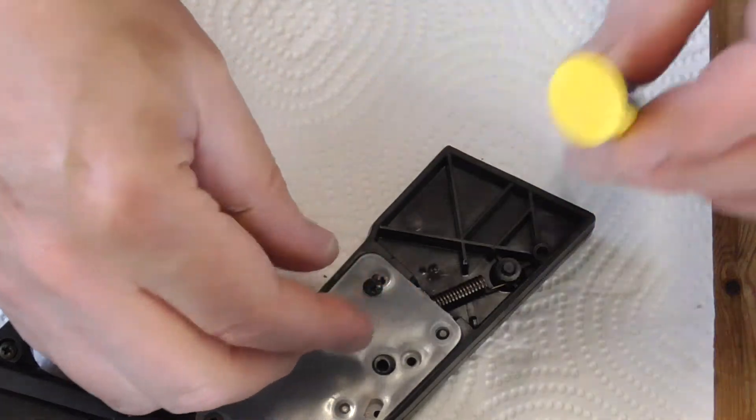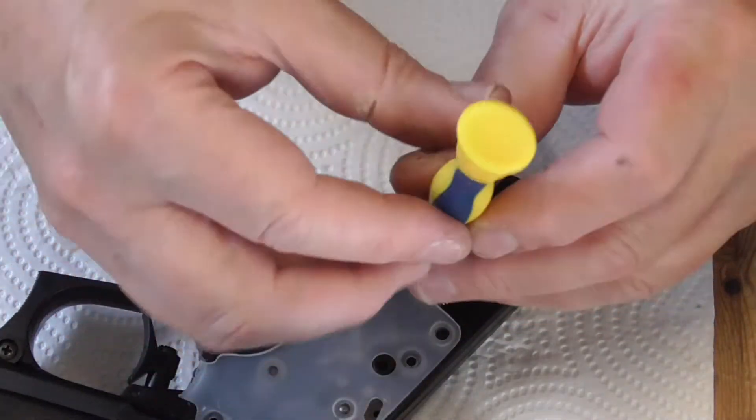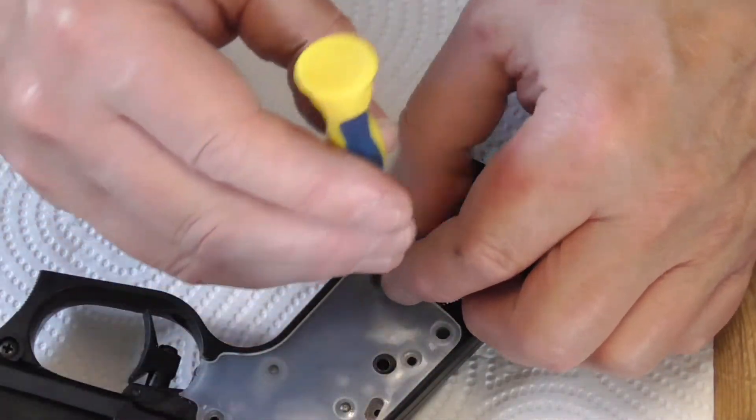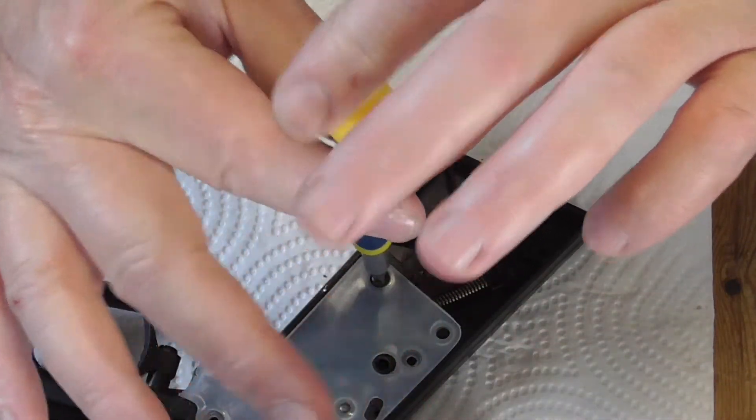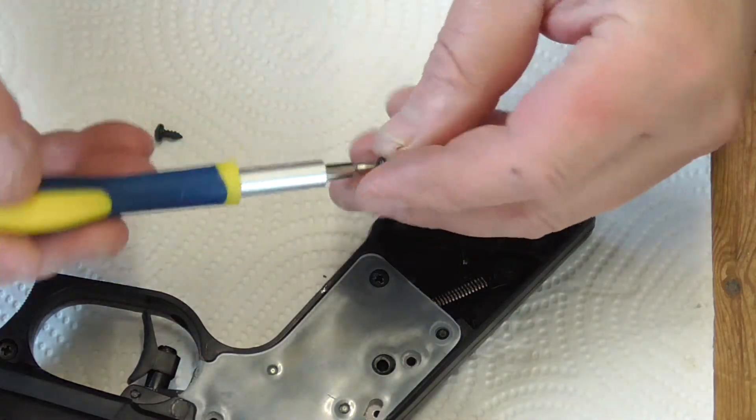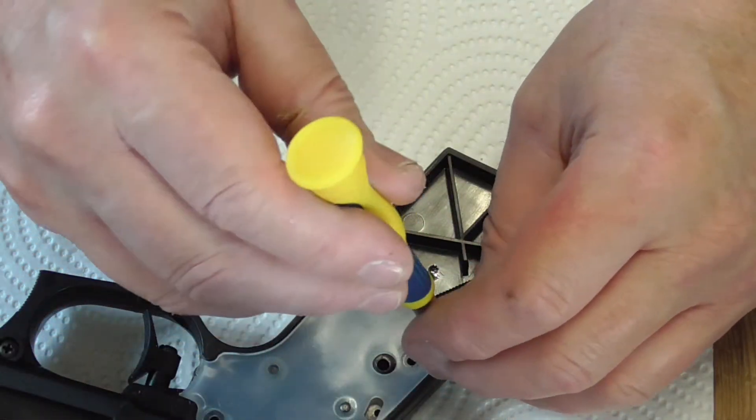Now these screws, they go into a plastic body, so you don't want to over tighten them. They're all the same length, so it doesn't matter which one. Make sure you don't cross thread them, and just use two fingers. If you over tighten them, you can strip the threads, and that's what you don't want to do.